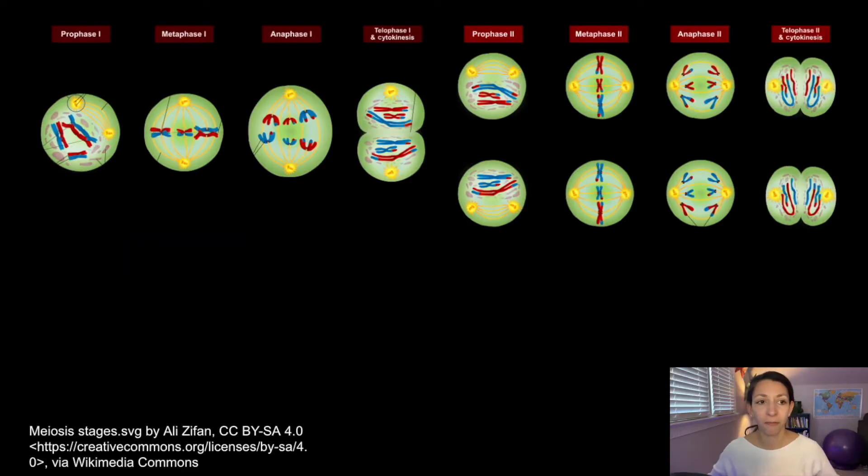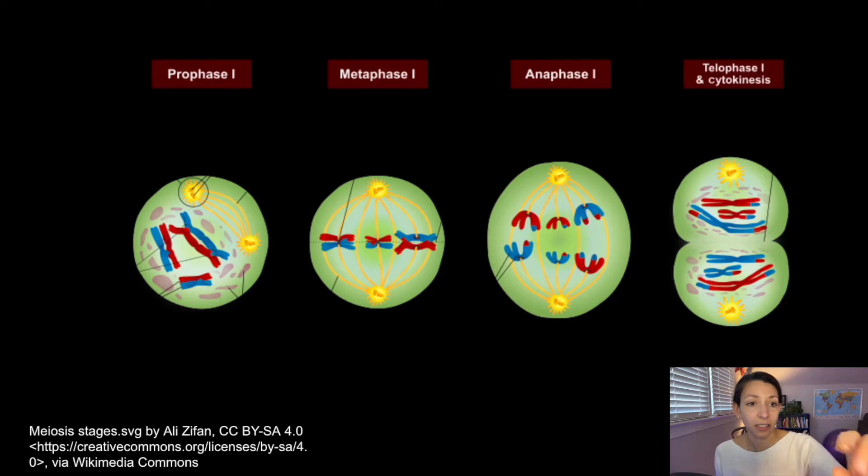All right, so here are all the stages of meiosis together. We have prophase 1, metaphase 1, anaphase 1, telophase 1, and cytokinesis, and then we do it all again. Prophase 2, metaphase 2, anaphase 2, telophase 2, and cytokinesis. So let's talk about what happens in each of these at a little bit closer level.